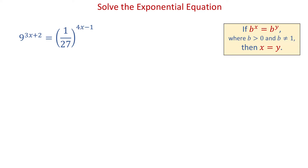In this video, we will solve two exponential equations. The first one is 9 raised to the 3x plus 2 equals 1 over 27 raised to the 4x minus 1.